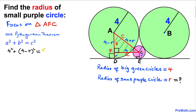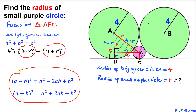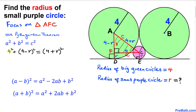Let's fill in the values. a is 4, so a squared is 16. b is (4 minus r), so b squared is (4 minus r) squared. c is (4 plus r), so c squared is (4 plus r) squared. We expand using the binomial formulas: (a minus b) squared and (a plus b) squared. So we get: 16 plus 16 minus 8r plus r squared equals 16 plus 8r plus r squared.